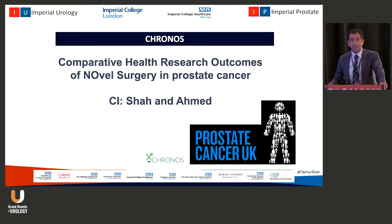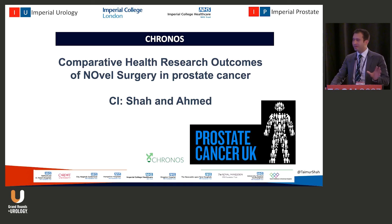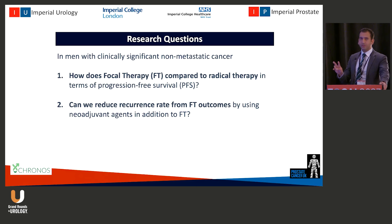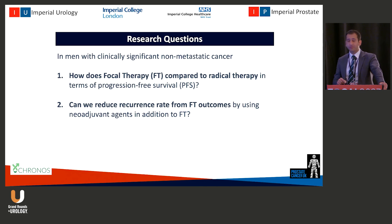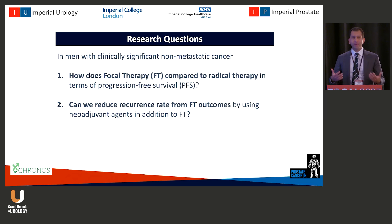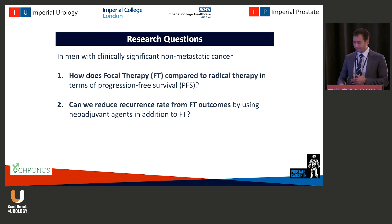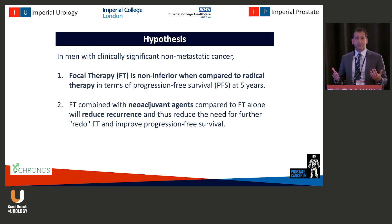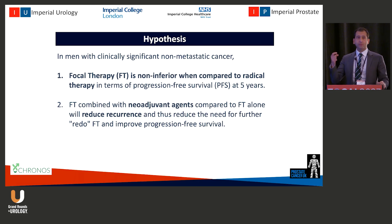The next study is our study, Kronos. We set out to answer two questions: first, how does focal therapy compare to radical therapy in terms of progression-free survival; and second, to future-proof the study, we wanted to test whether neoadjuvant agents can improve outcomes. The hypothesis was that focal therapies would be non-inferior to radical treatments at five years, and that using neoadjuvant agents would reduce the number of patients who develop recurrence, need redo procedures, and thus reduce progression.